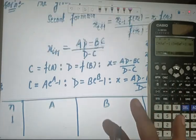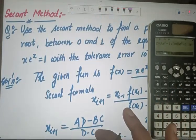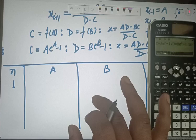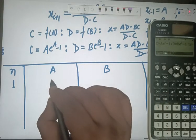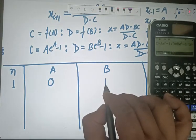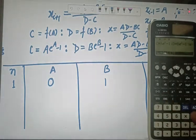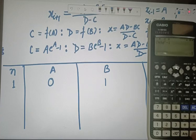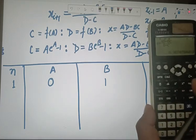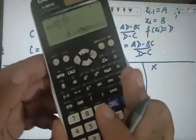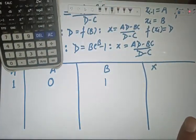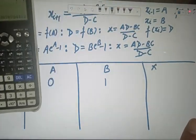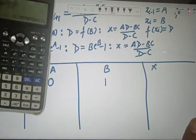Press CALC and it will ask for the value of a. The root lies between zero and one, so consider a = 0. Press equal, then enter the value of b = 1. Press equal, and the calculator will find the value of x.